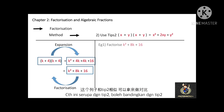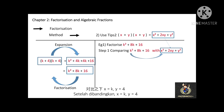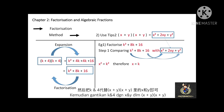Next, factorize k squared plus 8k plus 16. This algebraic expression is similar to Tips 2, so we use Tips 2 to perform the factorization. Comparing k squared plus 8k plus 16 with x squared plus 2xy plus y squared, we find x equals k, and since 16 equals 4 squared, y equals 4. Substituting x equals k and y equals 4 into (x plus y)(x plus y) gives (k plus 4)(k plus 4).